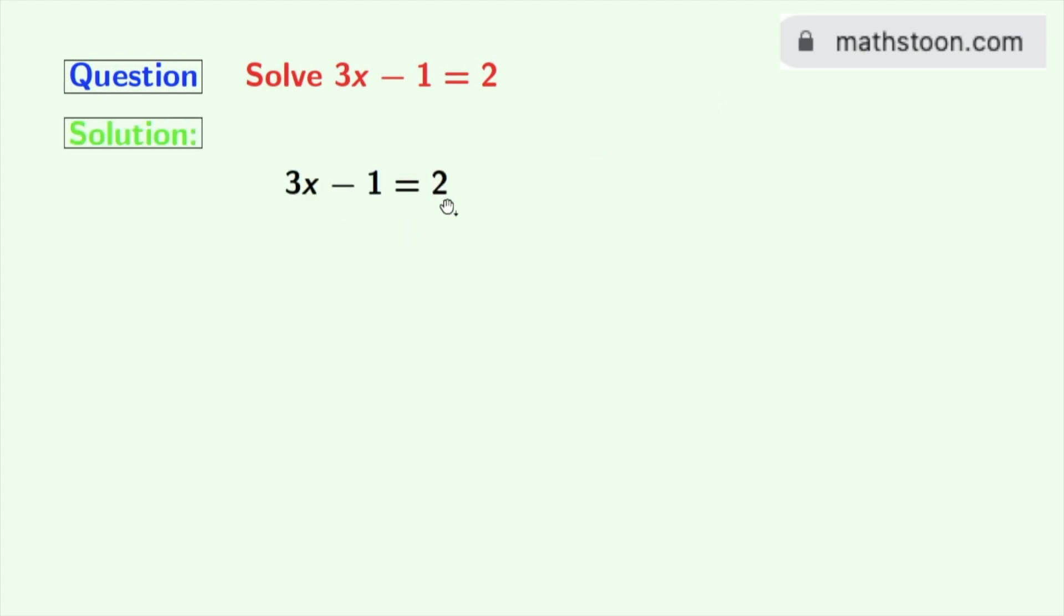This is our given linear equation. Now to separate the variable x and the constant terms, we need to move negative 1 to the right hand side. So we get 3x equals 2 plus 1.